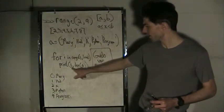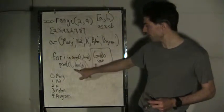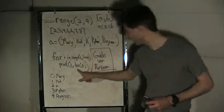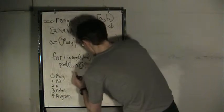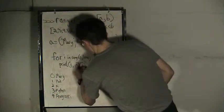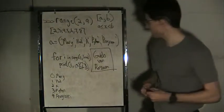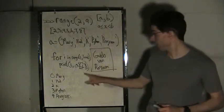And then it prints I, and then the I-eth element. That should not be that. That should be A bracket I. There we are. This is going to print the I-eth element of A.